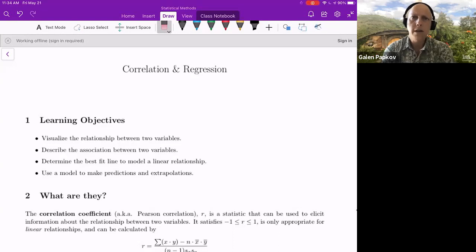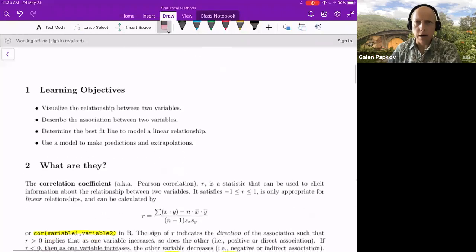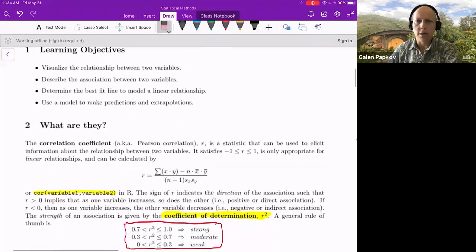So again, this video is going to focus on how do you compute this numerical summary r, which is the correlation coefficient. And it's also known as Pearson's r. Some of the objectives, you are going to learn how to visualize the relationship between two variables, describe the association. Eventually, in the next video, you'll be able to determine the best fit line, which is the regression line, and to use that model for making predictions and extrapolations.